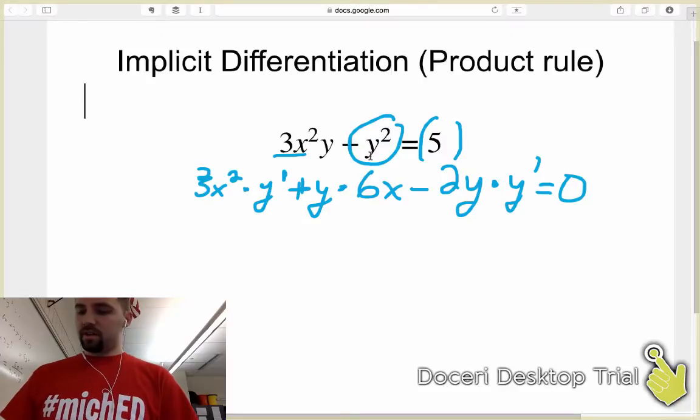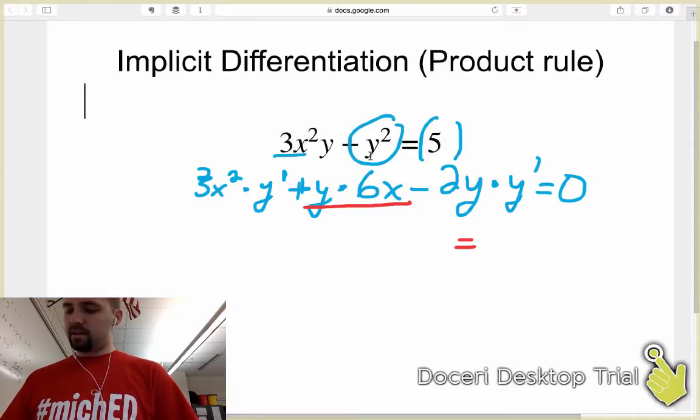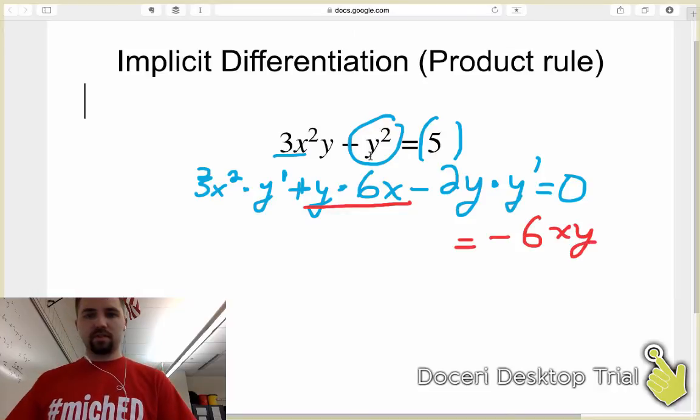The next thing that we're going to do is we've got to look at things that don't have y' in them and move them to the other side. So we'll take this y times 6 times x, we'll move it to the right-hand side, so we'll end up with on the right is -6xy.